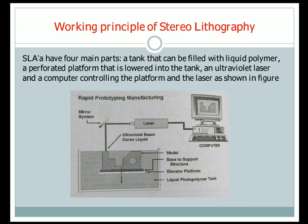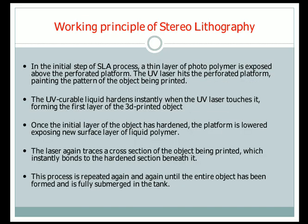In the initial step of the SLA process, a thin layer of photo-polymer is exposed above the perforated platform. The UV laser hits the perforated platform, painting the pattern of the object being printed by concentrating the UV laser onto the liquid polymer solution.